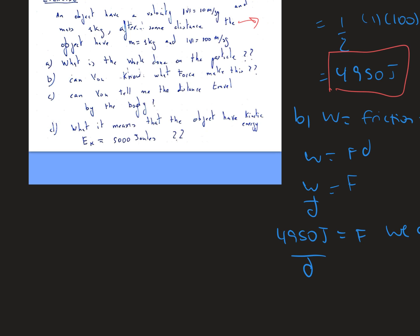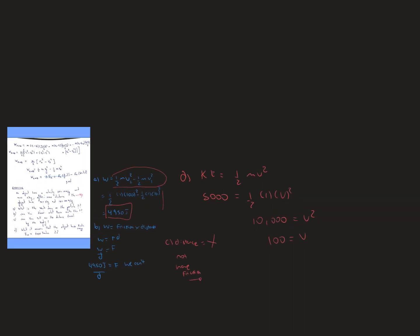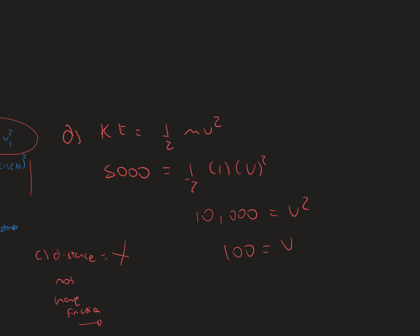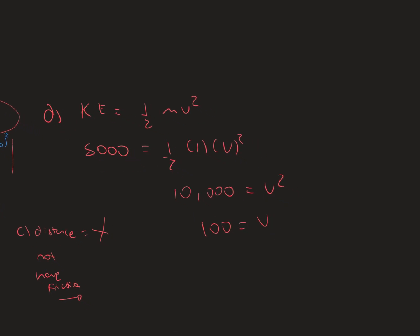For question D, what it means to have the object have a kinetic energy of 5000 joules means the following: the kinetic energy is the same as one half of the mass times the velocity squared. So we can say that 5000 equals one half times one times v squared.